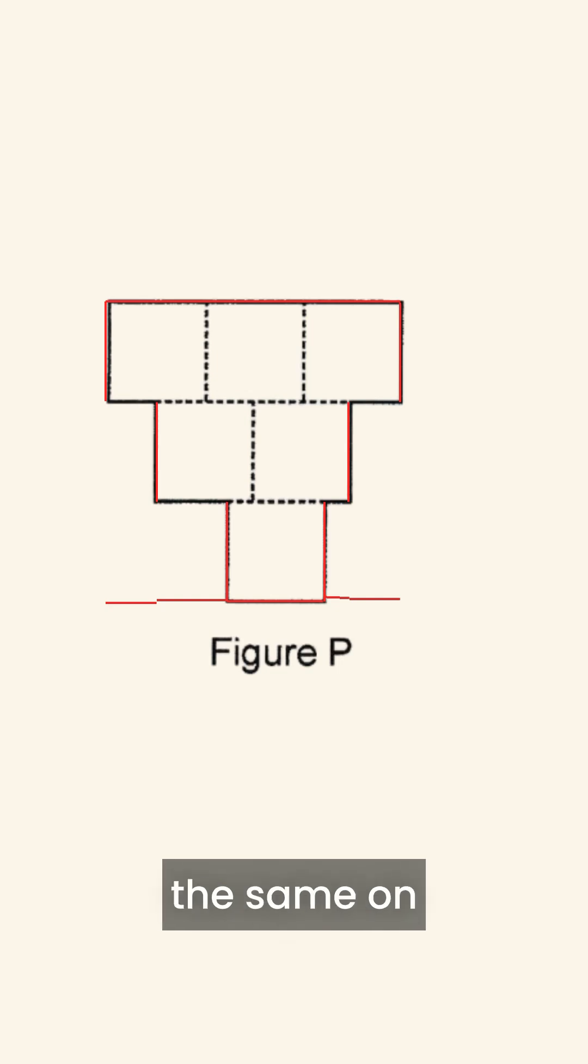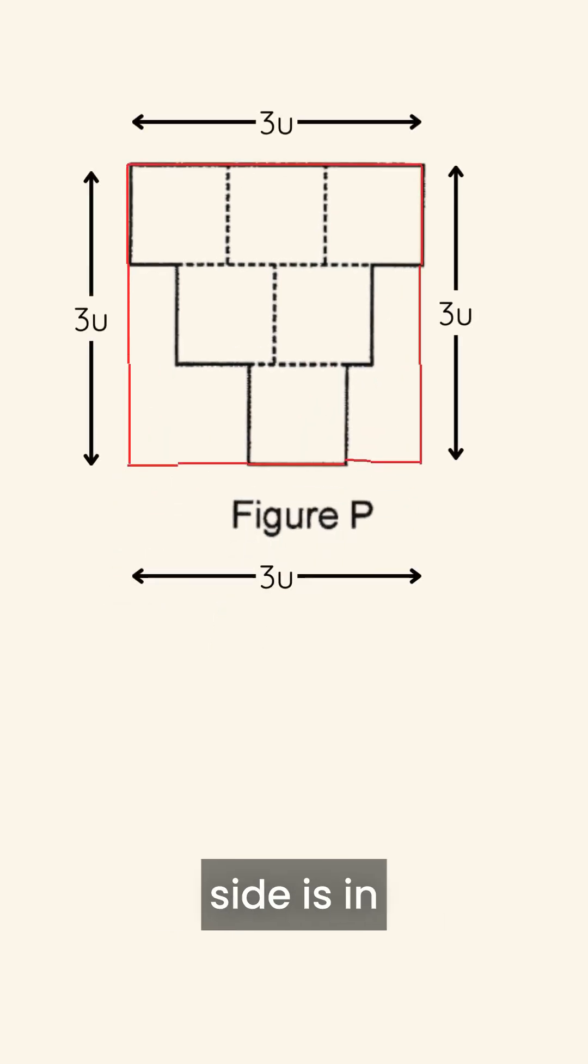Then, if I do the same on the left side, it now starts to look like something like a square. If I were to do the same on the right side, it actually looks like a square. And since all of the sides of the square is actually 3 squares, each side is 3 units.